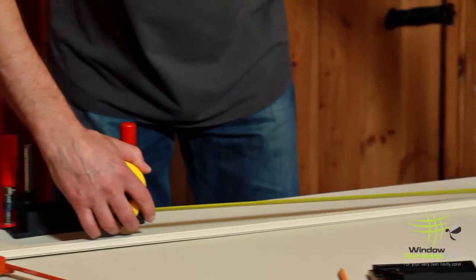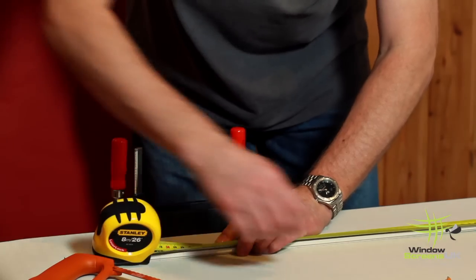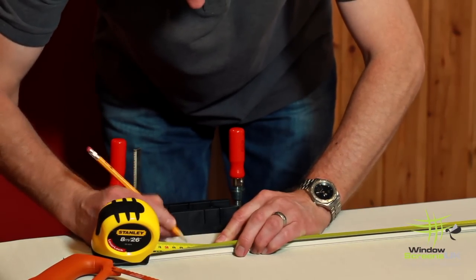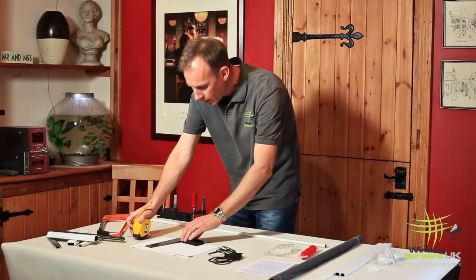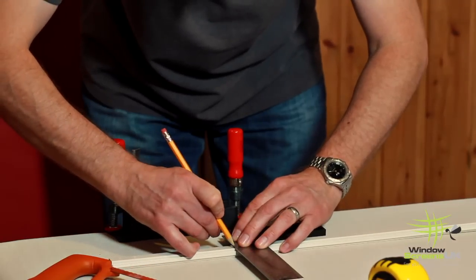So my first measurement, and I'm trying to be millimeter perfect here. I just take my pencil and mark off a small mark onto the frame. Take my square and just put a straight line across.